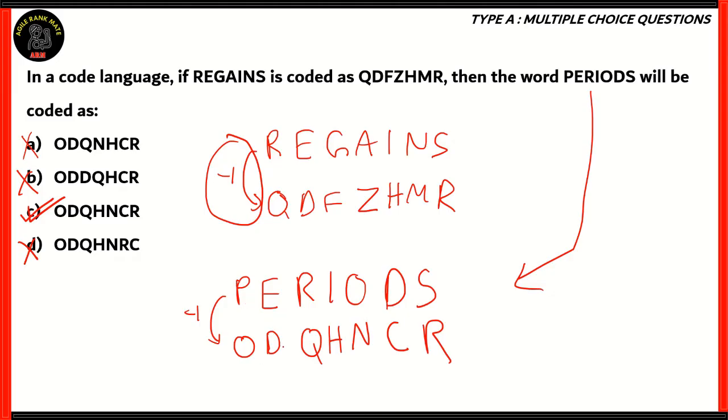O comes before P, D comes before E, Q comes before R, H comes before I, N comes before O, C comes before D, and R comes before S. That is how we solve this particular code, and that's why option C is the right option.